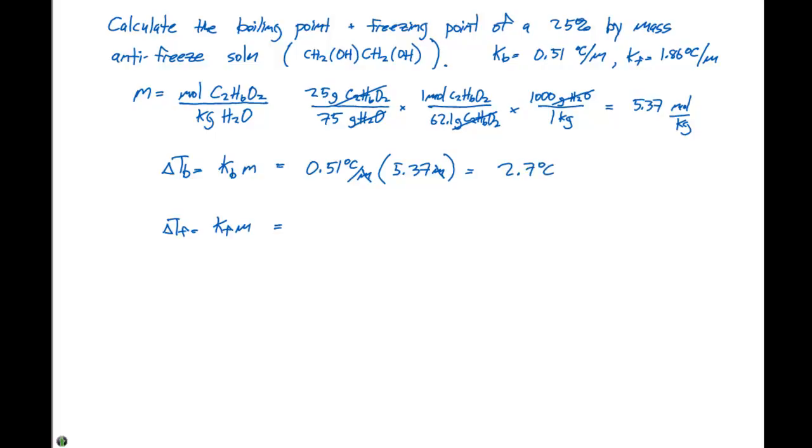We can do the same thing for our change in the freezing temperature. We have 1.86 degrees Celsius per molal times a molality of 5.37. And that's going to give us a value of 10 degrees Celsius.